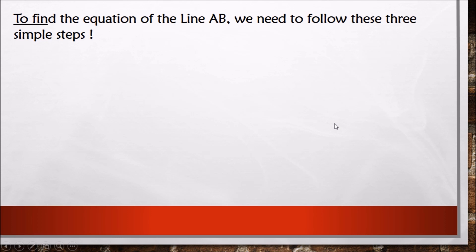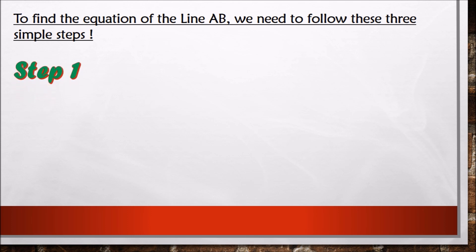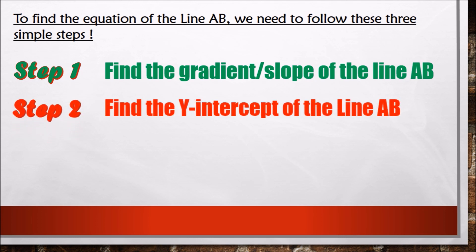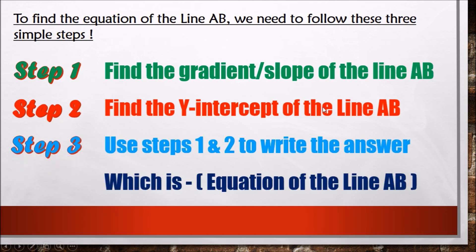To find the equation of line AB we need to follow three simple steps — and trust me, this is easier than you think. Step 1: find the gradient or slope of line AB. Step 2: find the y-intercept of line AB. Step 3: combine step 1 and step 2 to find the equation of line AB. So let's get started.